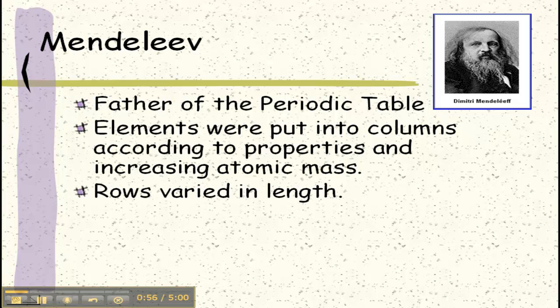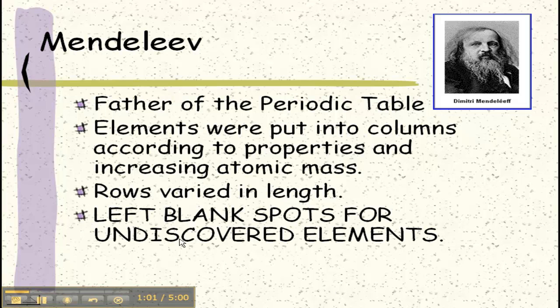He put the elements into columns according to their properties and according to increased atomic mass. He did not say that the rows had to be a specific length and he left blank spots for undiscovered elements.